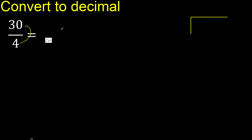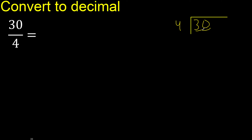30 divided by 4. 3 is less, therefore next, 0. 30 is not less.